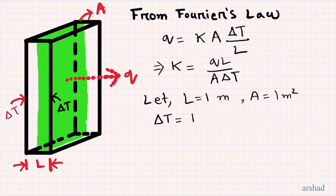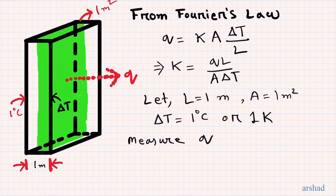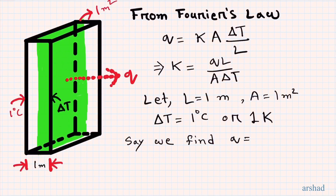From this definition we can figure out a way to measure thermal conductivity. We choose unit parameter values: a length of one meter, a cross-sectional area of one meter squared, and a temperature difference of one Kelvin. We assume one-dimensional heat transfer through a plane wall, set up an experiment, and measure the amount of heat transferred.